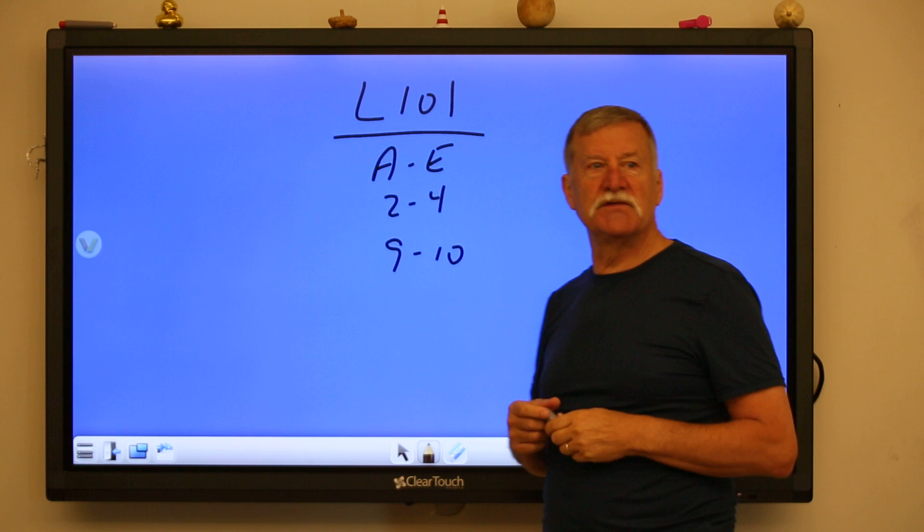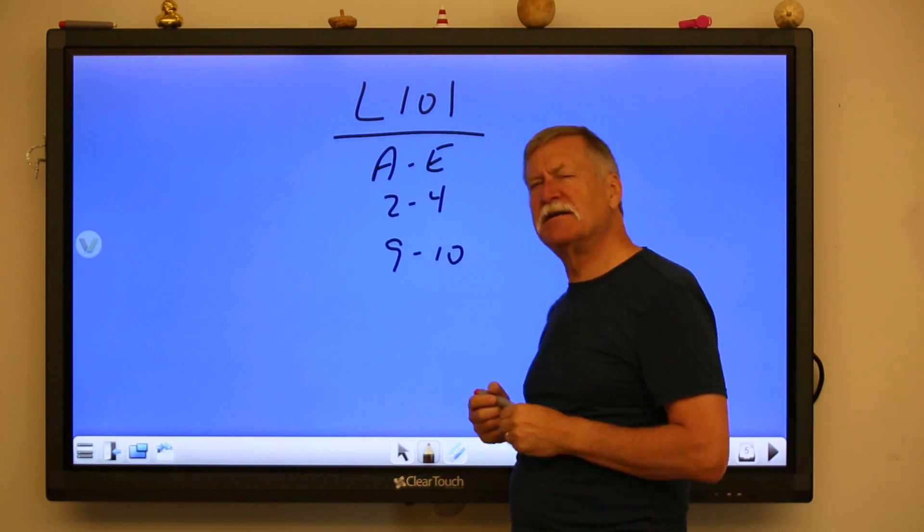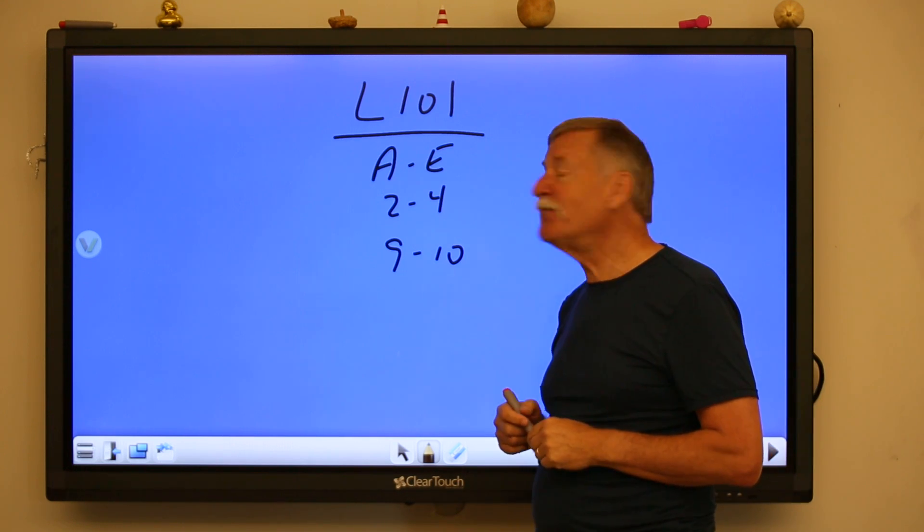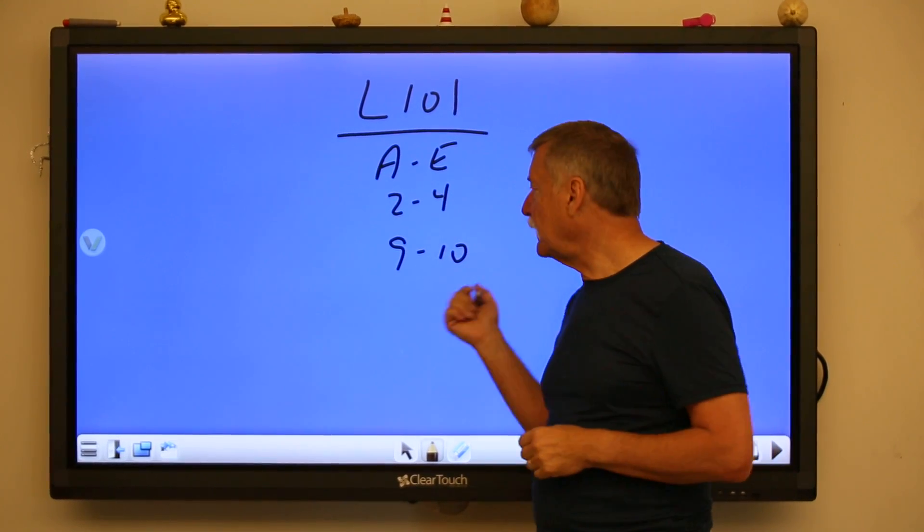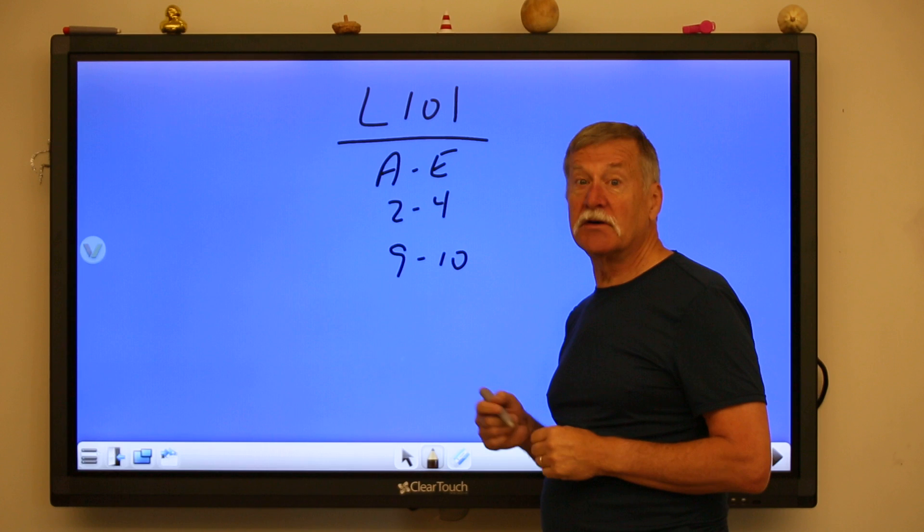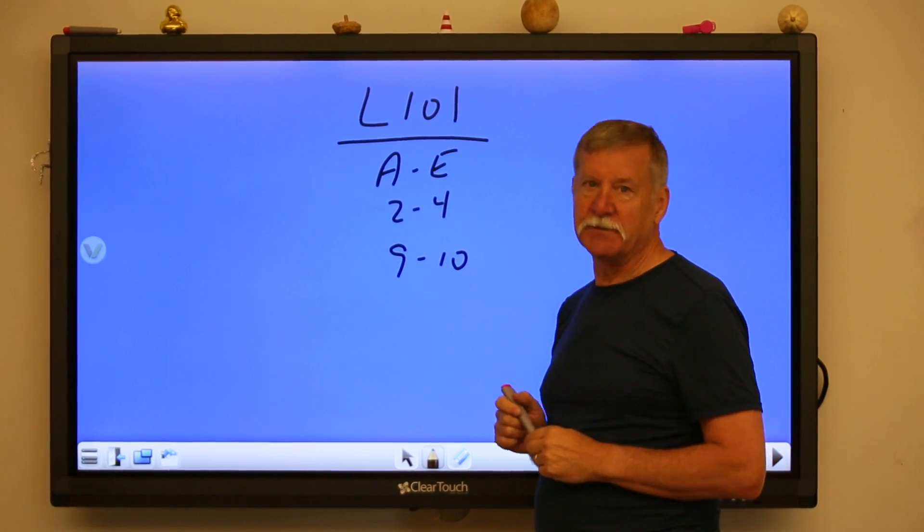That's about it. That's as tough as I can make it. So give it a try. Lesson 101, A to E, 2 to 4, and 9 to 10. And make sure all your fractions are in simplest terms.